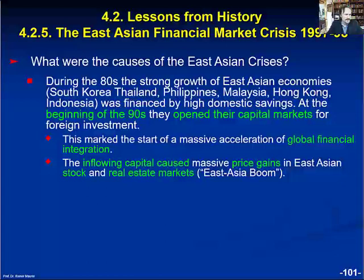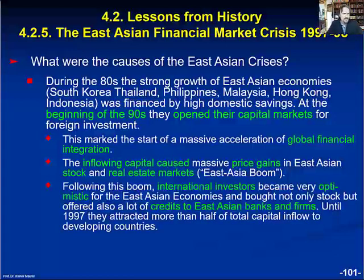The inflowing international capital caused massive price gains in East Asian stock and real estate markets. The era was called the East Asia boom. Following this boom, international investors became very optimistic about the East Asian economies and bought not only stock, but also offered a lot of credits to East Asian banks and firms. Until the year 1997, these East Asian countries attracted more than half of total capital inflows to developing countries.